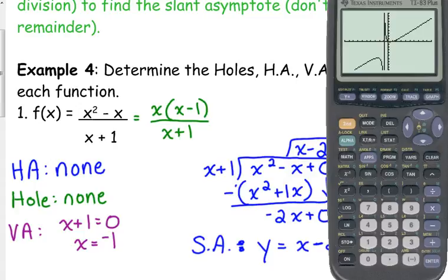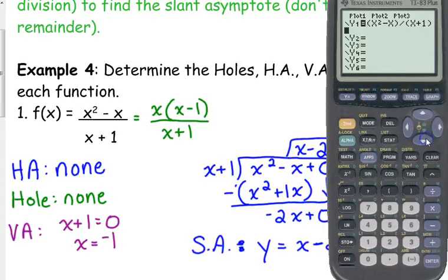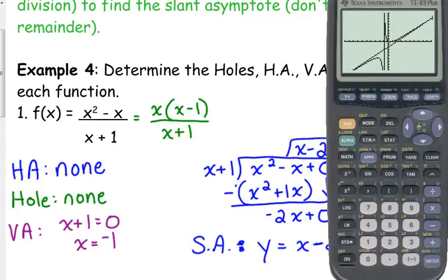Notice the vertical line there at negative 1. We don't have a hole or anything like that. Here's how you can check your slant asymptote. Type in the equation for the slant asymptote into your y2. x minus 2. I'm putting that on y2. So if I did it correctly, see how that line lies perfectly right in between those two curves. And we can see the function approaching it over here and approaching it over here.